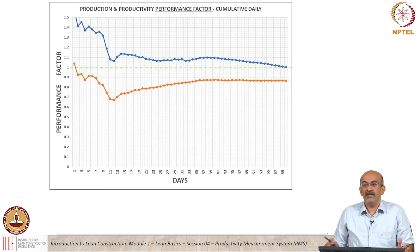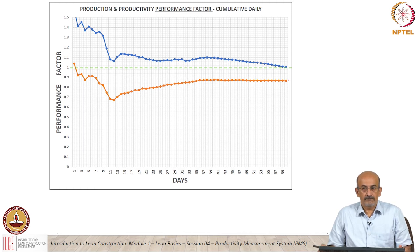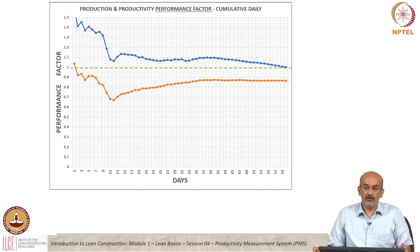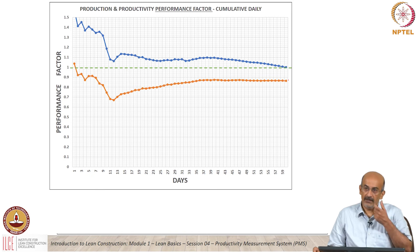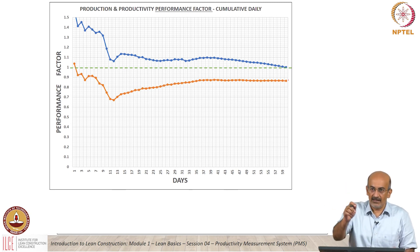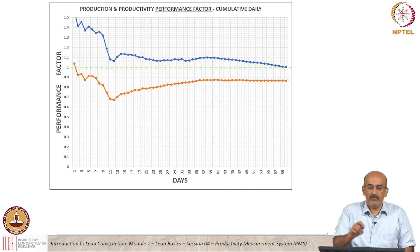A student asks whether we need both production and productivity on a single graph with performance factor 1. The instructor clarifies: performance factor 1 is the target, whether it is productivity or production — that is where we always compare. If you want the numerical detail of how much, you go back to the earlier graph. This graph tells you whether you are meeting your target or not, and because both are on the same axis it is visually easier to monitor.